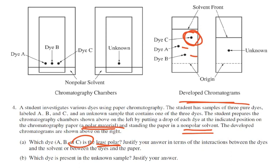Which dye is present in the unknown sample? The critical piece is how far did it move compared to the solvent. It looks like it went about halfway. Here's the solvent — this unknown goes about halfway. Back here, the dye that goes about halfway compared to the solvent is dye A. So the answer is A, because it moved about halfway compared to the solvent.